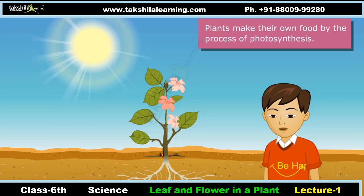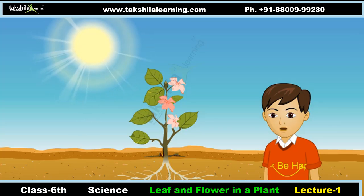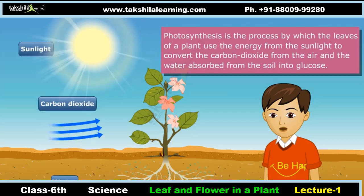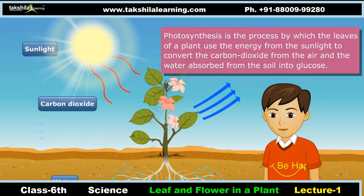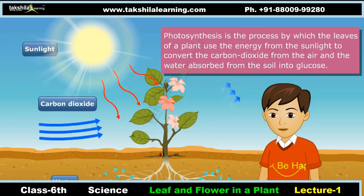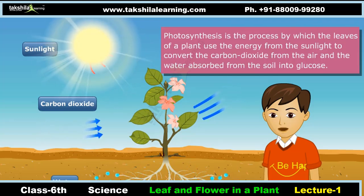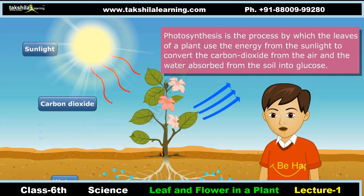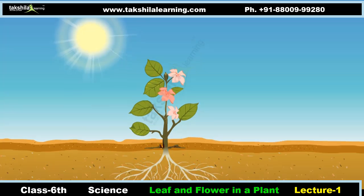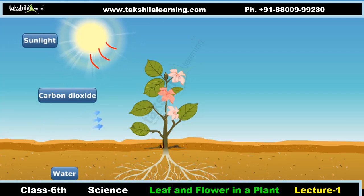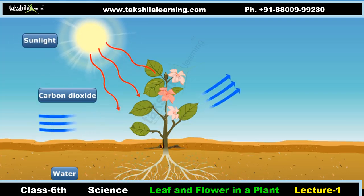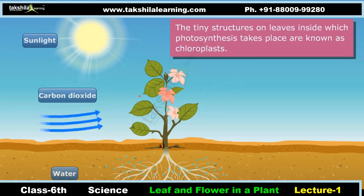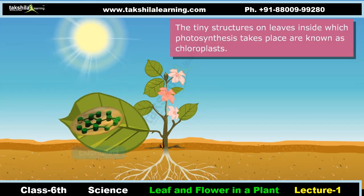Like animals and human beings, plants also require food for their survival. However, unlike animals and human beings, they can make their own food by the process of photosynthesis. This process takes place in the leaves of the plant. The leaves use energy from sunlight to convert carbon dioxide absorbed from the air and water absorbed from the soil into glucose. The food prepared by leaves is then transported to the different parts of the plant.